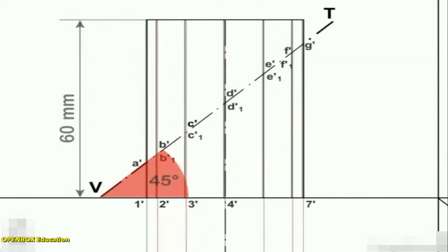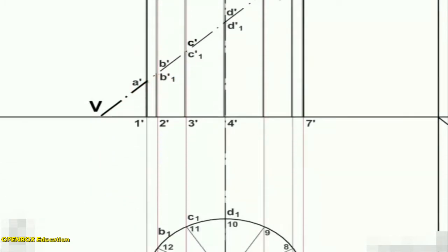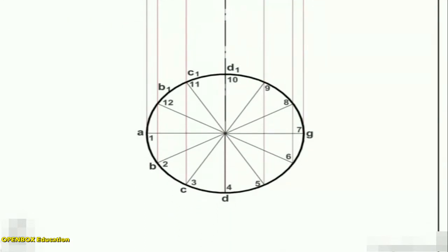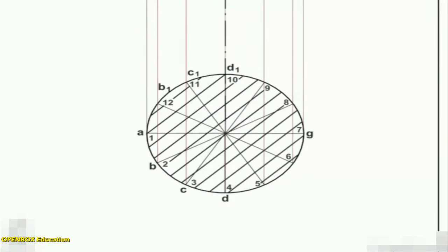Name the points at which these lines are cut by the VT. In the top view, these points lie on the circle and hence the same circle is the top view of the section.